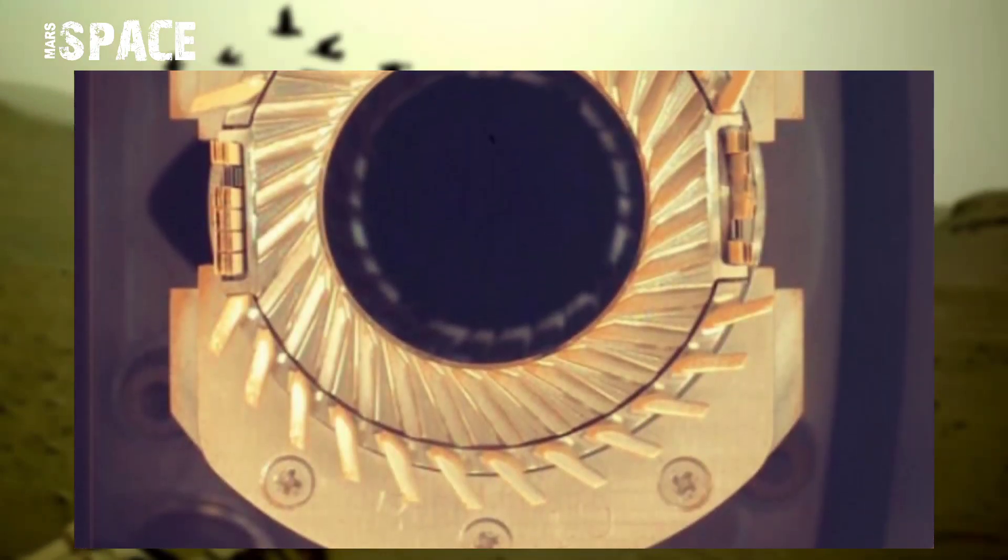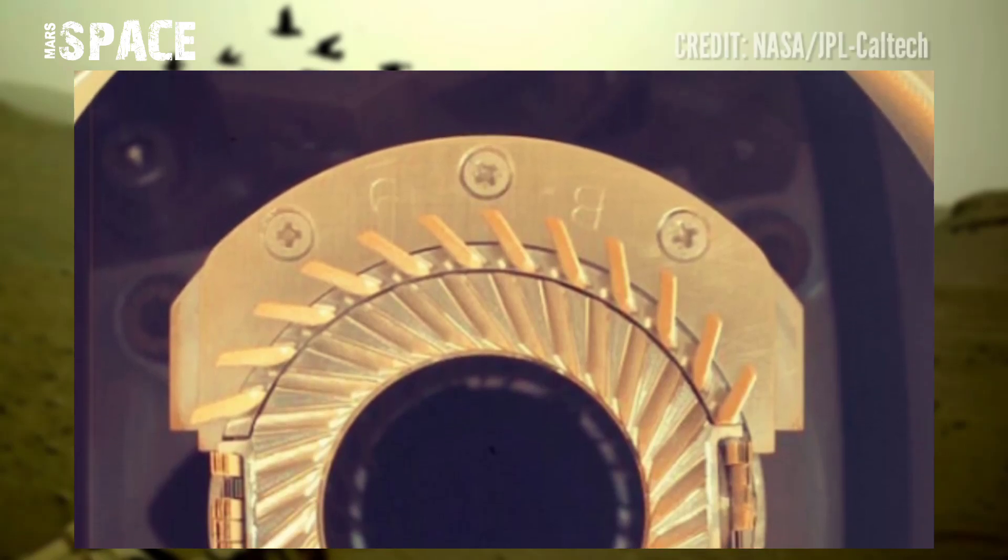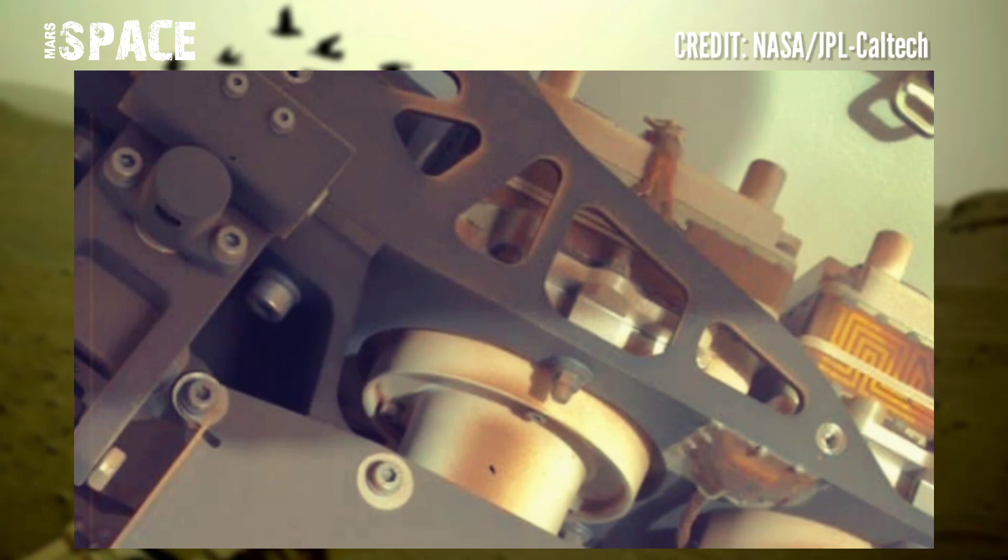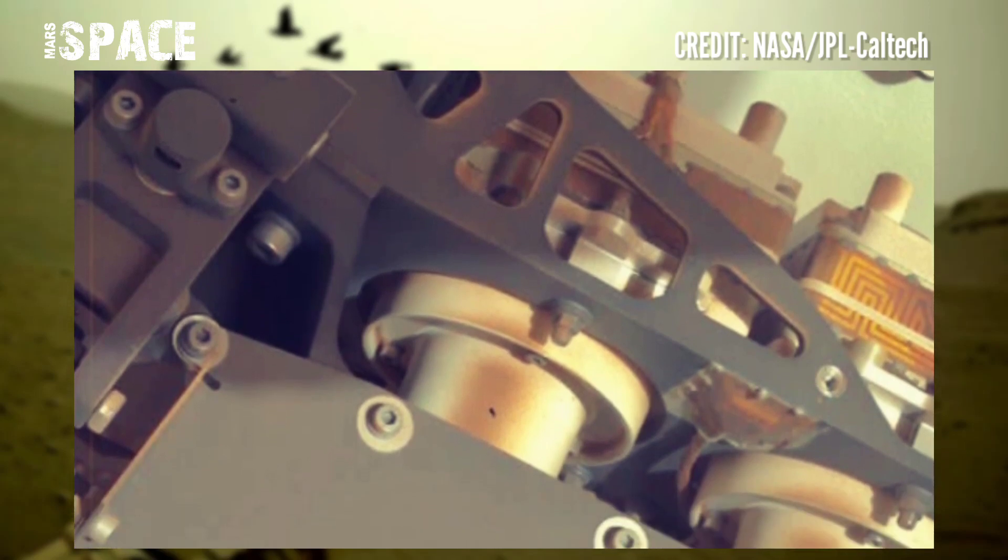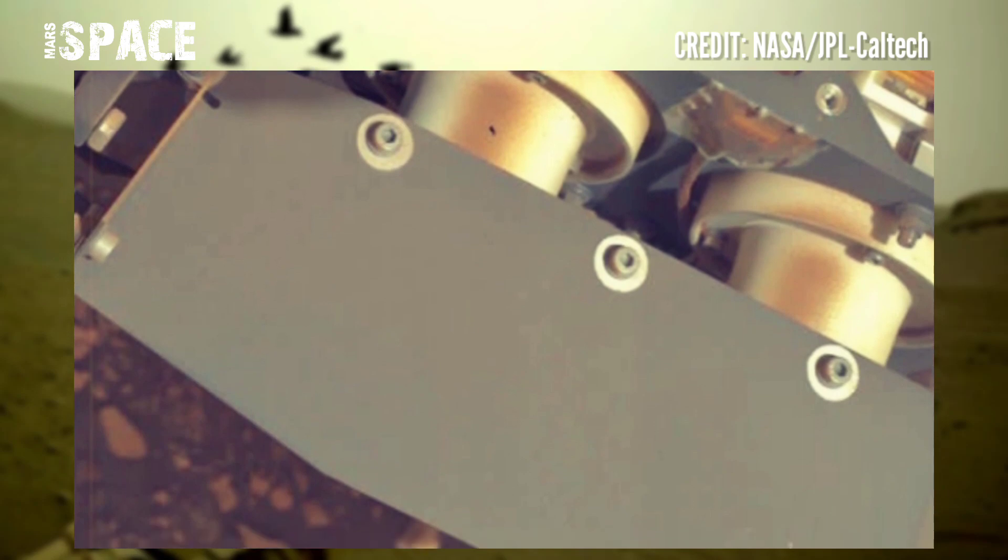NASA's Mars Perseverance rover acquired these images at the surface of the red planet using Mastcam-Z. Mastcam-Z is a pair of cameras located high in the rover's mast and captured these interesting images.